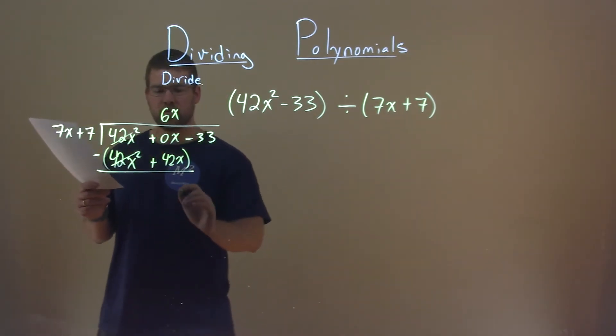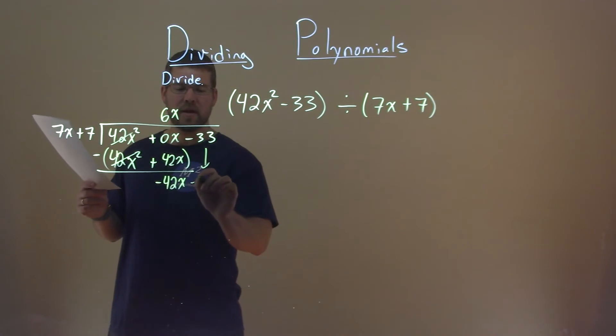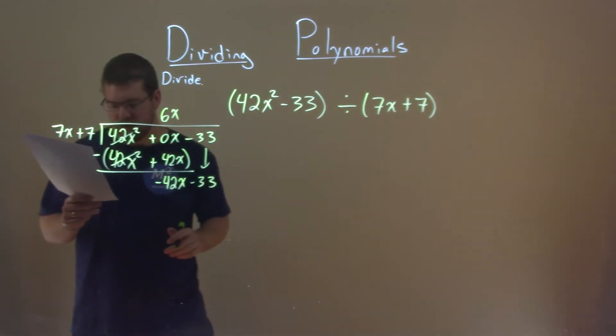0 minus 42x squared is a minus 42. Sorry, 0 minus 42x is a minus 42x. Bring down the minus 33. And now we need to do it again.